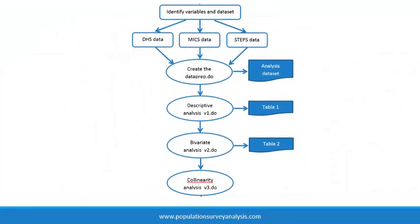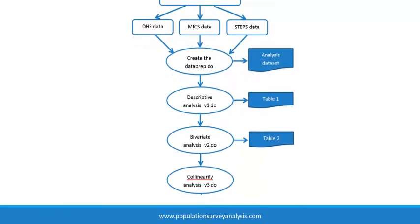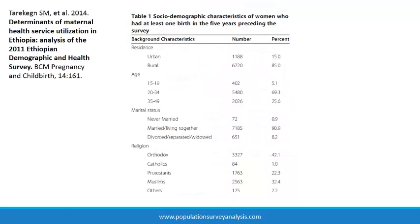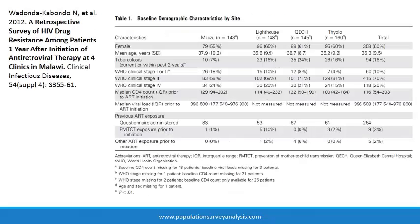After the analysis dataset is prepared, we describe the study population. Results of the descriptive analysis are usually summarized in Table 1 of a manuscript. Table 1 might simply provide summary statistics of the overall population, though in some manuscripts it describes the characteristics of two or more subgroups — for example, an intervention group and a comparison group.